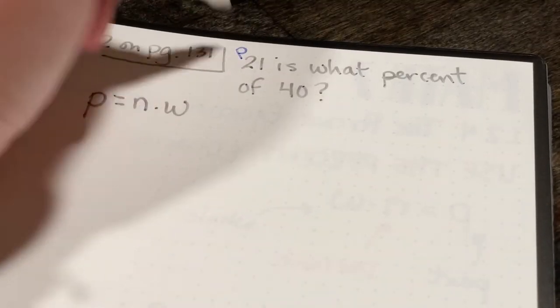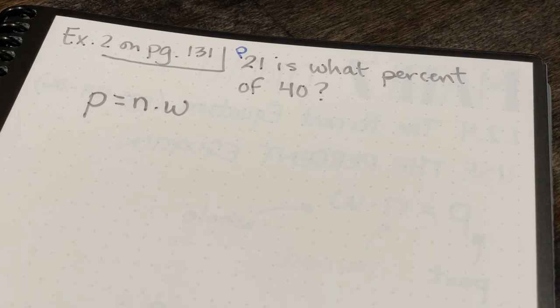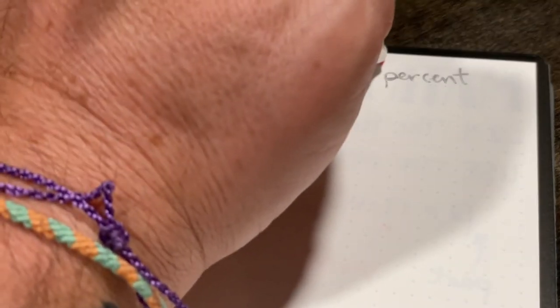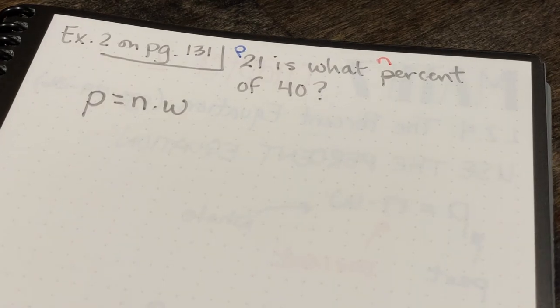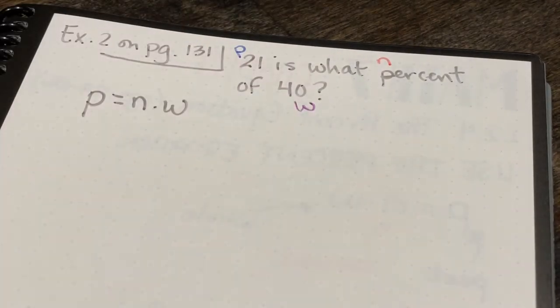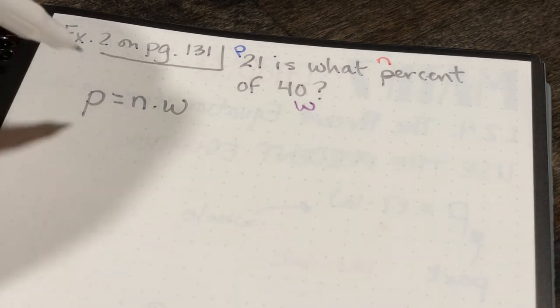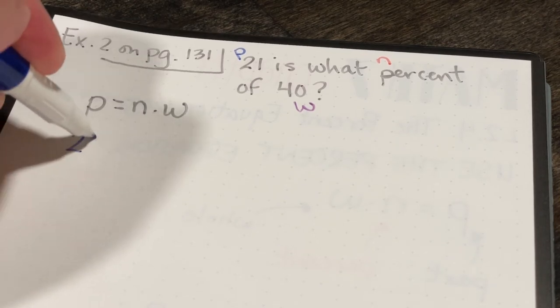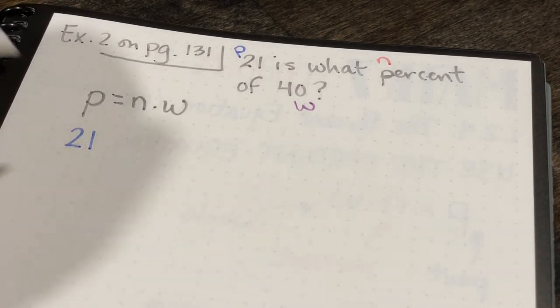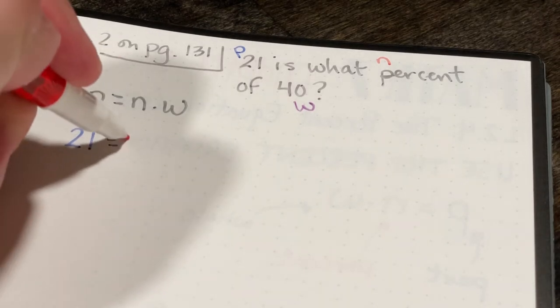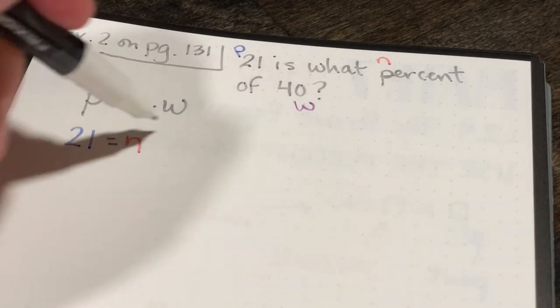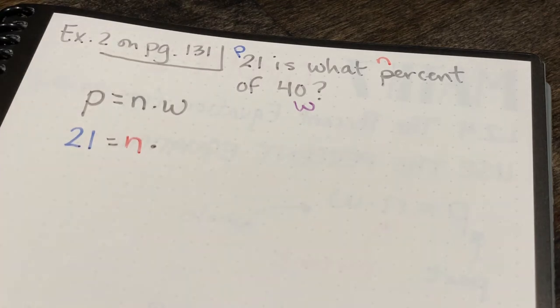Now in my problem, I'm going to identify each of those pieces. So 21 is the part, what percent, which I don't know, is going to be my n, and my whole is going to be 40. So what I'll do is I'll substitute my known quantities. So my part is 21, and that's going to equal my unknown quantity, which is the percent, times 40.